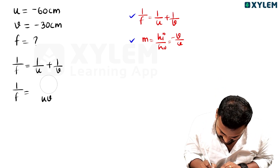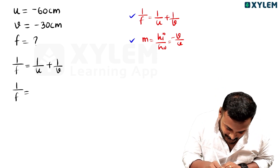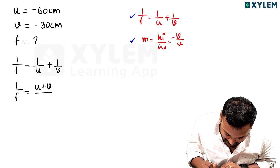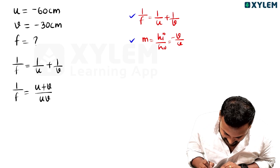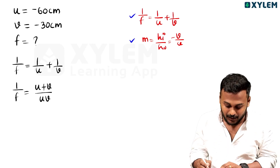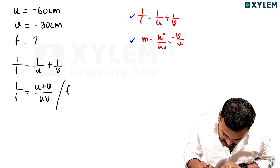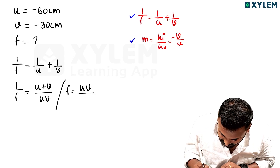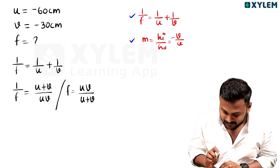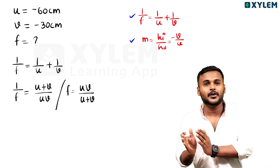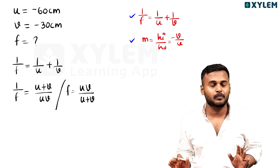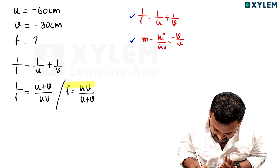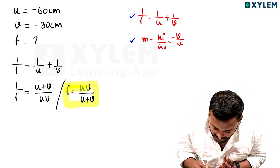So f equal to uv divided by u plus v. That's a very important item. We don't want to change that formula further. Now the fifth step is substitution — we can substitute the given data.